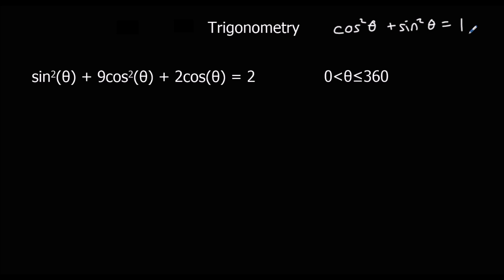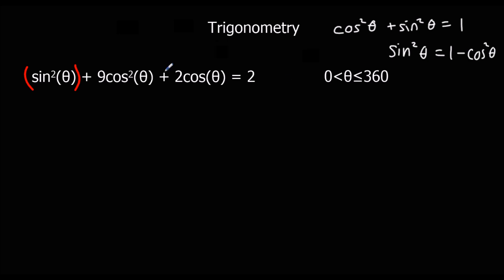To solve it, we need everything in terms of cos or all in terms of sin. Because there are two cos terms and only one sin term, and the sin term is already squared, the easiest thing is to eliminate sin²θ. We subtract cos²θ from both sides of the identity to get sin²θ = 1 − cos²θ, and substitute that in.